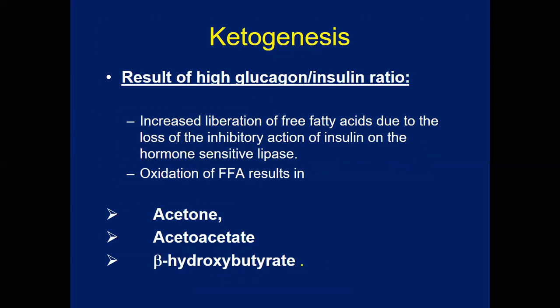Hepatic gluconeogenesis and glycogenolysis secondary to insulin deficiency and counter-regulatory hormone excess result in severe hyperglycemia, while lipolysis increases free serum fatty acids. This metabolism of free fatty acids serves as an alternative energy source and results in accumulation of acidic intermediate and end metabolites like ketones and ketoacids — acetone, acetoacetate, and beta-hydroxybutyrate — which are detected in the urine or blood.